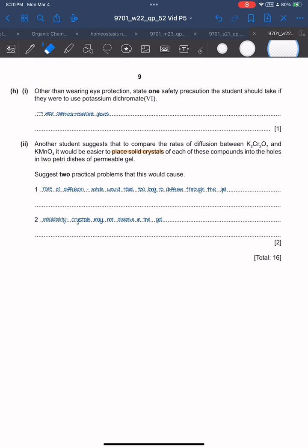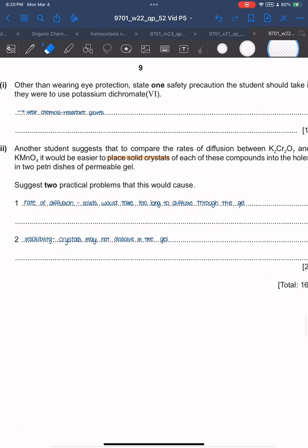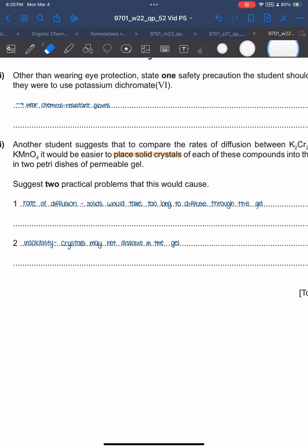Another student suggested to compare rate of diffusion between dichromate and manganate, it would be easier to place salt crystals of each compound into the holes of two petri dishes. Two practical problems this would cause: salt would take too long to diffuse to the gel, and the crystals may not dissolve in the gel due to insolubility.